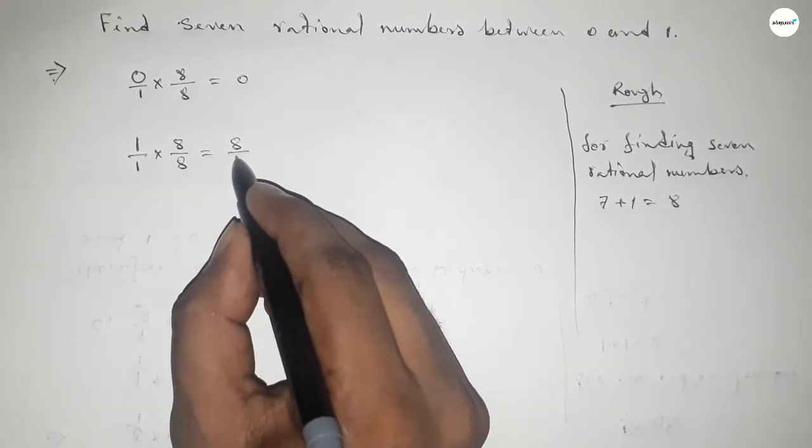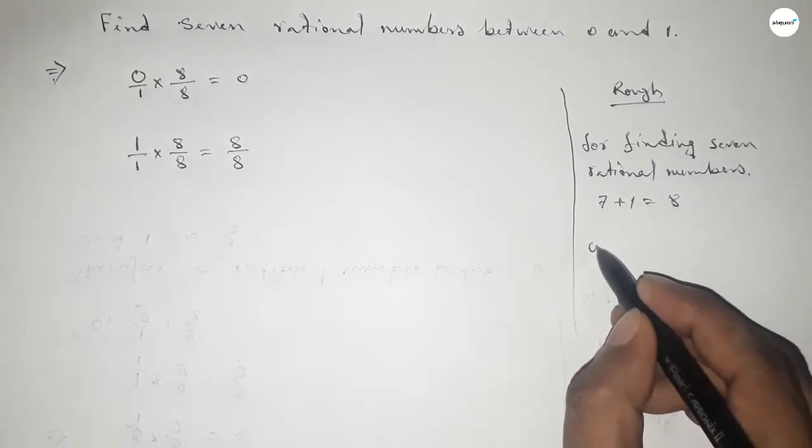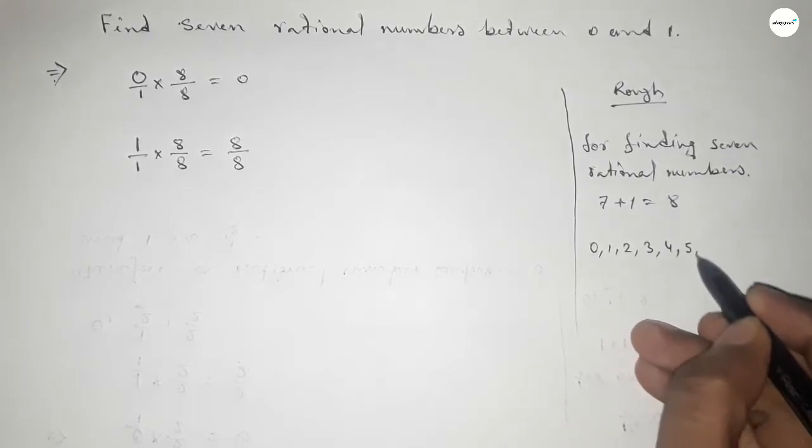Okay, now between 0 to 8, we can find seven natural numbers, and by these natural numbers we can form seven rational numbers between 0 to 1.